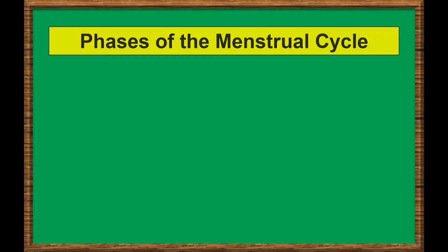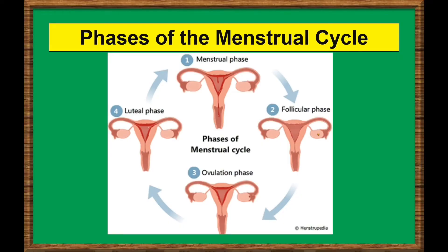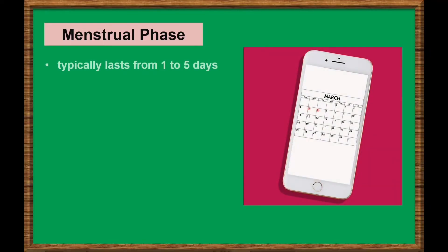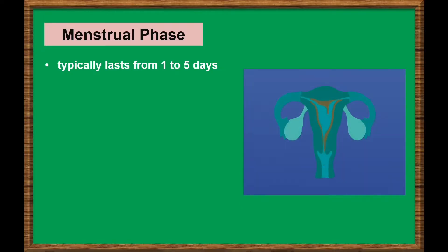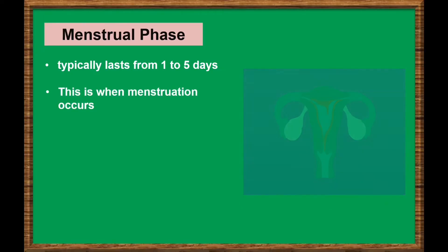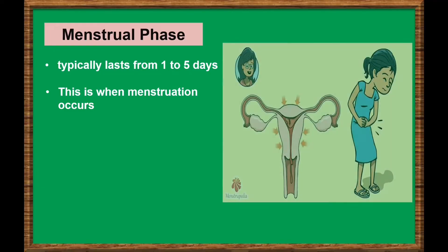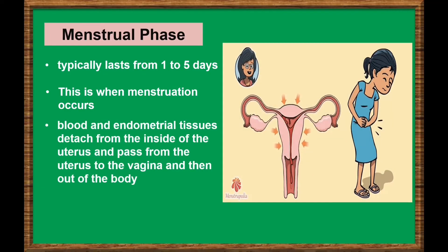The Phases of the Menstrual Cycle. The menstrual cycle begins with the menstrual phase, which typically lasts from 1 to 5 days. This is when menstruation happens. During the menstrual phase, arteries that supply the endometrium of the uterus constrict and break.